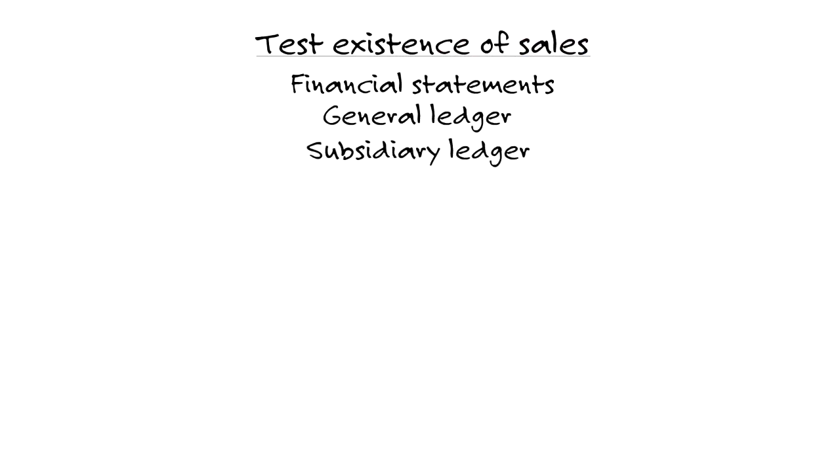Now, note, let's say the auditor was trying to test the existence of sales. We'd go from the financial statements and then drill down to the details. From the financial statements, to the general ledger, to the subsidiary ledger, and finally to the sales detail.